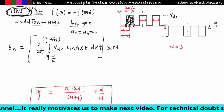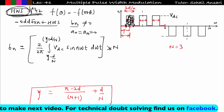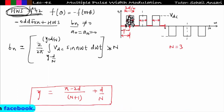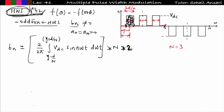That gives bn for a single pulse. To get bn for the total pulse width per half cycle, multiply by n. Also, due to half-wave symmetry, multiply by 2 because from pi to 2pi the bn remains the same as from 0 to pi. All these concepts will be explained in Lecture 42 on application of Fourier series.